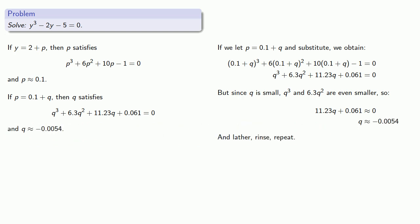And lather, rinse, repeat. If q is approximately negative 0.0054, then q is negative 0.0054 plus r, then r satisfies some horribly messy equation. And so y is 2 plus p, 0.1, plus q, negative 0.054, plus r, whatever it is, and so on.